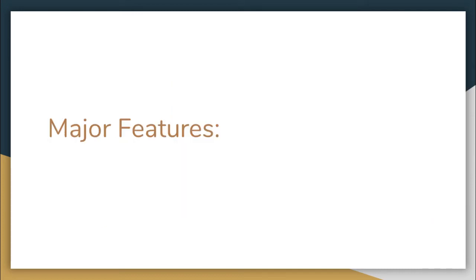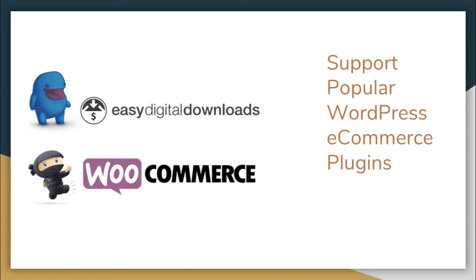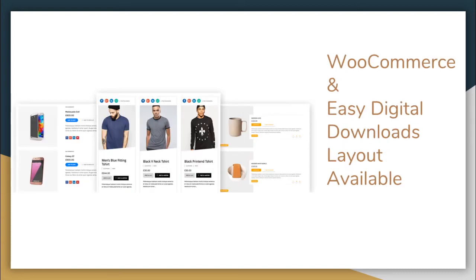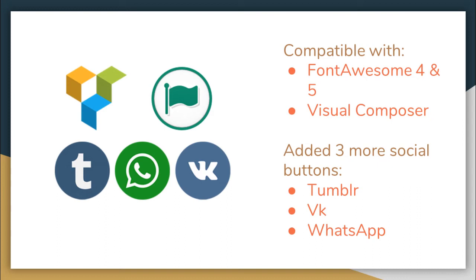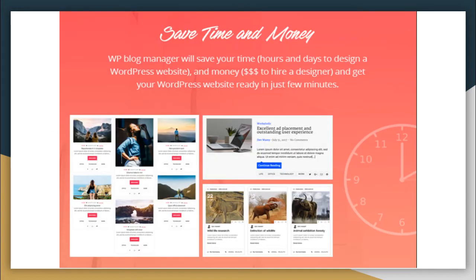The major features of this plugin include 100 plus pre-designed beautiful ready-to-use templates. It supports popular WordPress eCommerce plugins such as WooCommerce and Easy Digital Downloads, and such layouts are available for both. It is compatible with Font Awesome 4 and 5 and Visual Composer. We have also recently added three more social buttons for Tumblr, Wiki, and WhatsApp, plus export and import content in just one click.